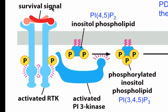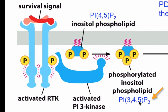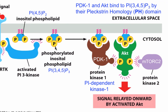A receptor tyrosine kinase, upon binding to the ligand, will recruit the adapter molecule PI3 kinase. Once PI3 kinase binds to the phosphotyrosine in the activated receptor tyrosine kinase, it will be activated and will phosphorylate PI(4,5)P2 to generate PI(3,4,5)P3. This phospholipid, now present on the cytosolic side of the membrane, becomes the docking site for two different proteins that contain what is called the pleckstrin homology, or PH domain, which binds to PIP3. One of them is going to be AKT, the important kinase we're discussing today.